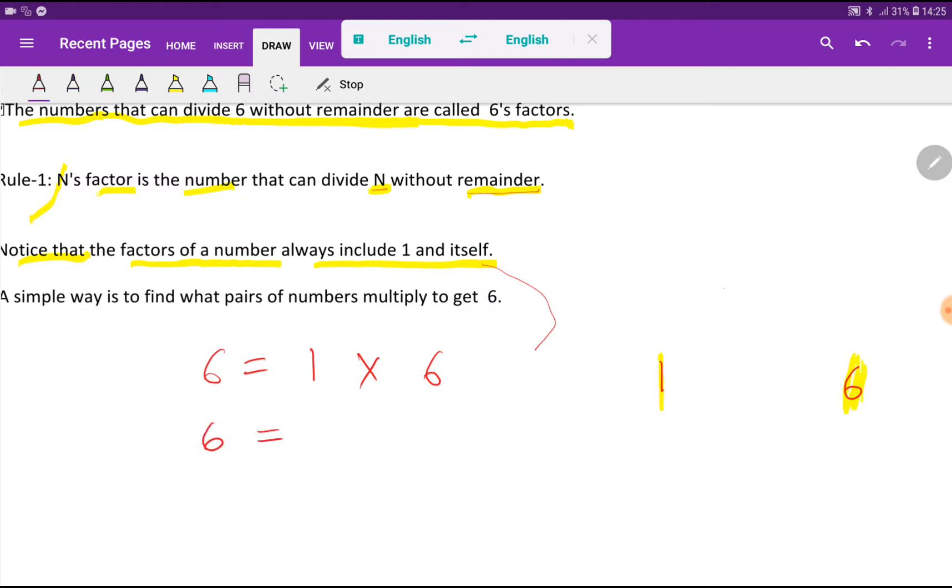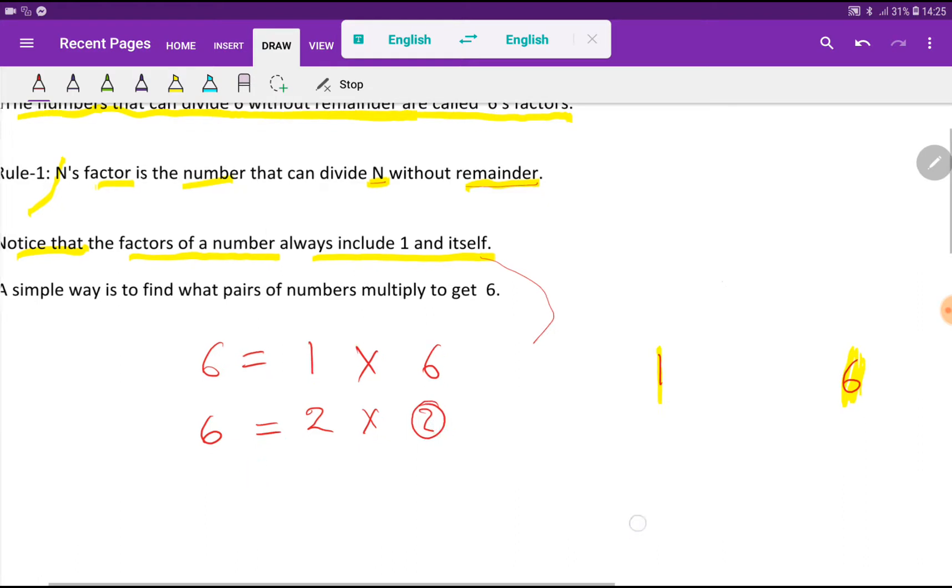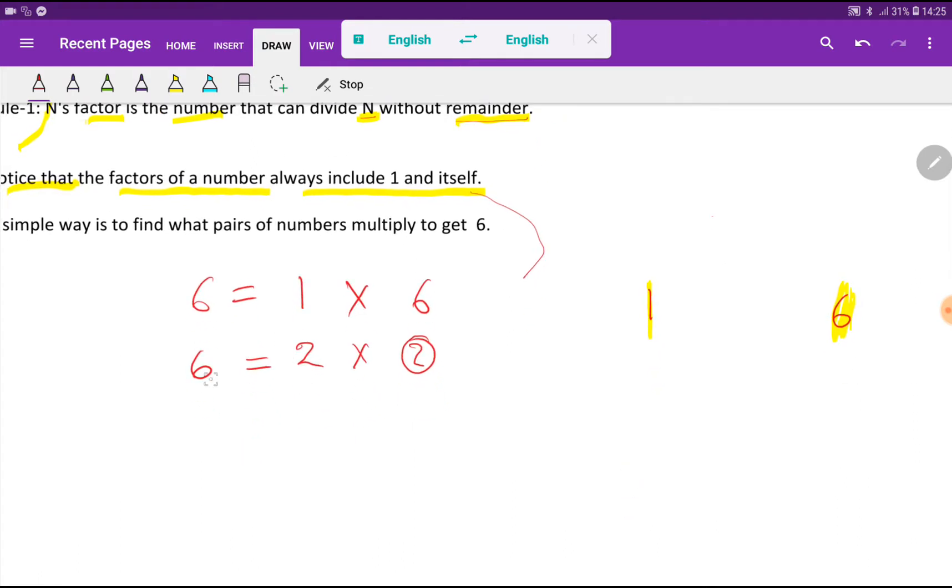Now I will find out the other factor of 6. After 1, I will take 2. What number will come here? To find the number, we have to check whether 6 is completely divisible by 2 or not.